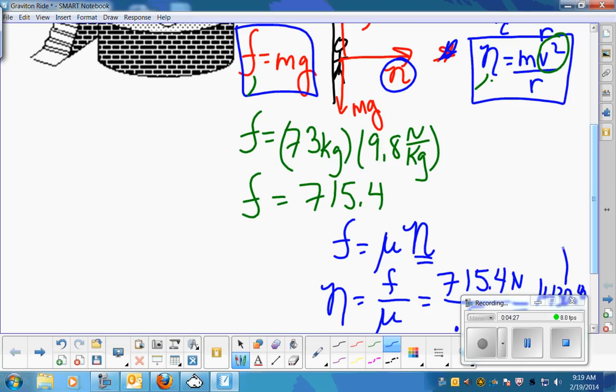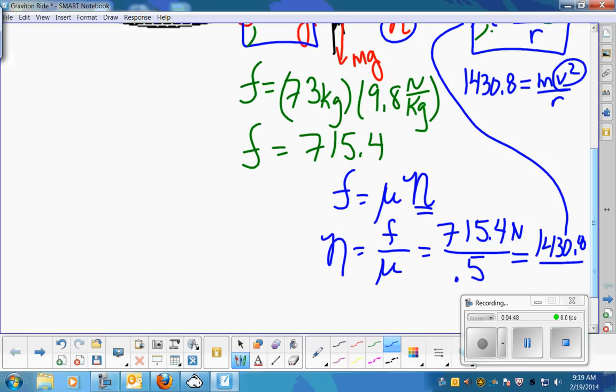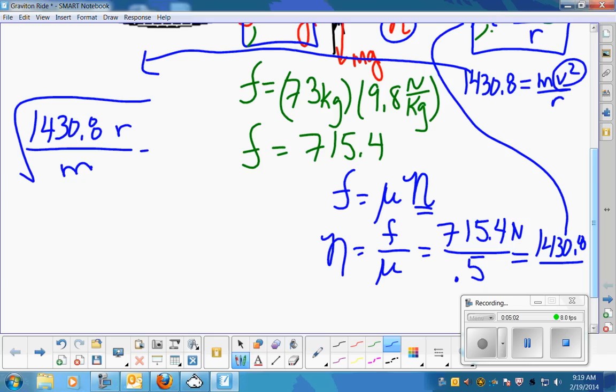So my normal force is 1430.8. Now I can grab that, plug it in here. 1430.8 is equal to - I'm going to solve for that speed - m v squared over r. But I know what the mass is. I know what the radius is. Okay. So all I'm going to have to do is take that 1430.8, multiply it by the radius, divide it by the mass, take the square root, and that should be my speed.